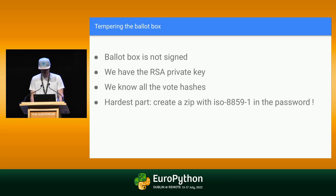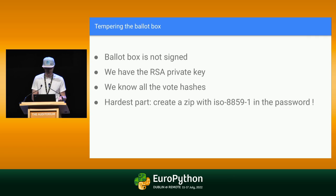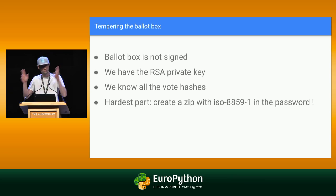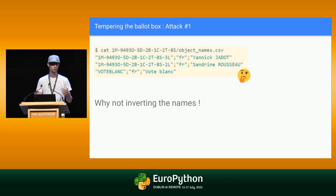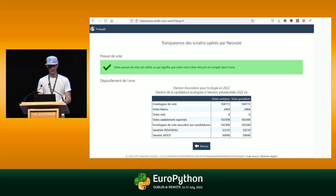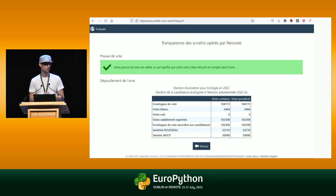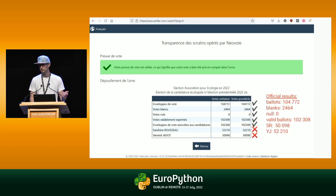Let's have a bit of fun. The ballot box we saw has no signature on it. We also saw that they gave us the RSA private key for decryption. We know all the vote hashes because they are inside the ballot box — the same ones used inside the so-called proof of vote. So we can try to tamper with the ballot box. First thing: there is a file called 'object names' with the ID and name of each candidate. A really basic attack is to just modify this file and switch the names. If we generate a new ballot box archive and provide it to the official checking website with a regular proof of vote, everything is considered valid — except now it's the wrong candidate that won.